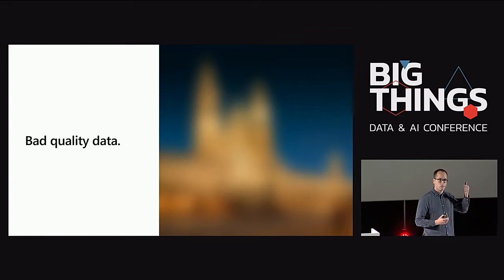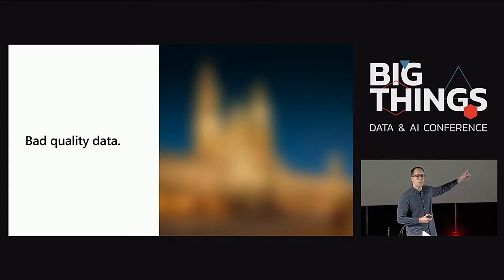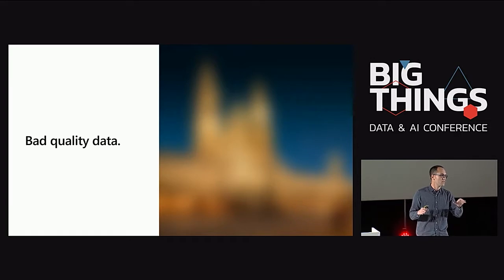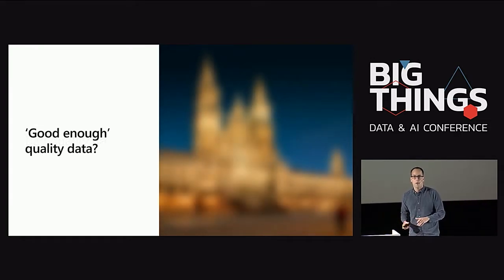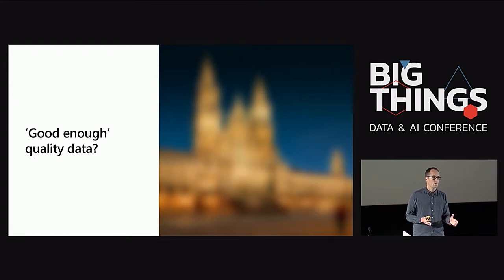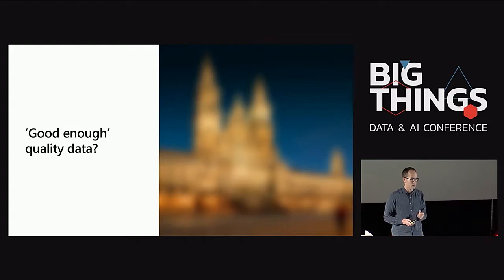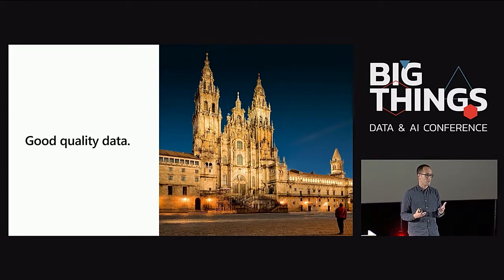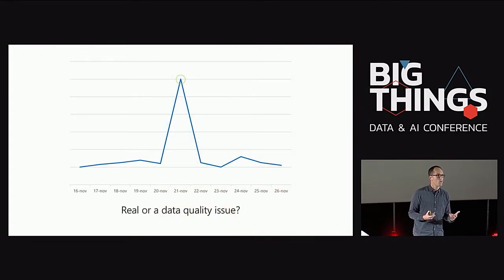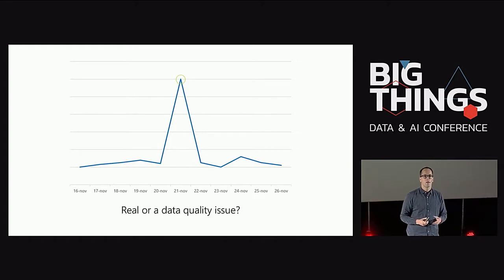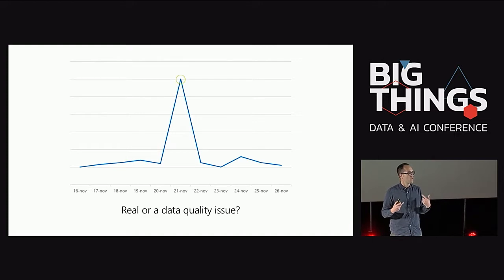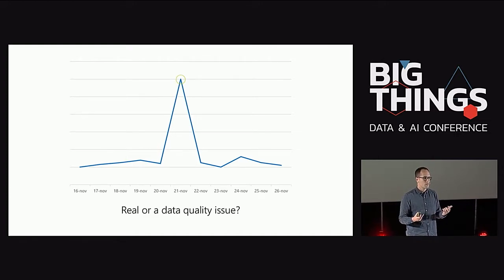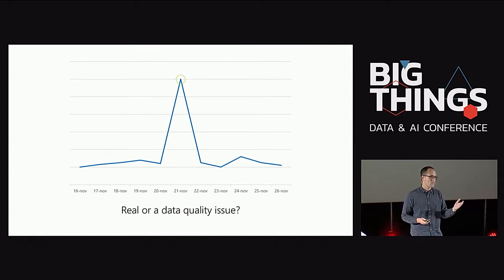Can anybody guess what is this picture? We all agree that this is bad quality data. What about this? Good enough, right? Some people could say they can't guess it, or claim they are the best one. However, we all agree that this is good quality data. And this is what happens sometimes when we are dealing with data. When we see a huge spike in a graph, someone might ask: is this a data quality issue or just a normal load or volume of data that I'm ingesting? How can we say this is a data quality issue or not?